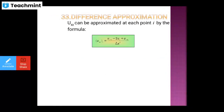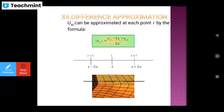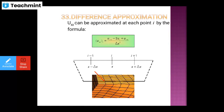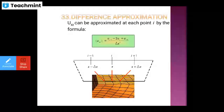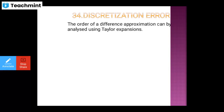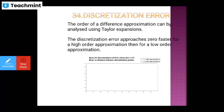Next is the difference approximation concept. Here u_xx can be approximated at each point by the formula: u_xx equals (u_(i-1) - 2·u_i + u_(i+1)) / delta_x². You can see the points: x is i, x + delta_x is i+1, and x - delta_x is i-1. So this is a difference approximation. There is also a discretization error in the Taylor series expansion. The discretization error shows that it is faster for high-order approximation than for low-order approximation.